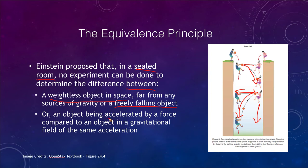Now the other example is an object accelerated by a force compared to an object in a gravitational field. What that means is if you were in a rocket being accelerated, there is no experiment you can do that would tell the difference between that rocket being accelerated at a constant rate out in space compared to that rocket sitting on the surface of the Earth unmoving. Again, this is in a sealed room.